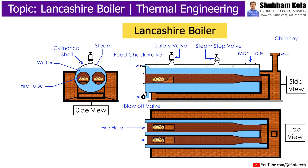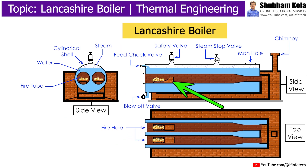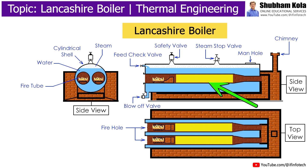During working, water is pumped into the machine through the economizer such that the fire tube is fully immersed in water. The fuel is burned at the grate, where a small arch-shaped brickwork is provided at the end of the grate to deflect flue gases upward and prevent entry of burning coal and ash into the fire tubes.